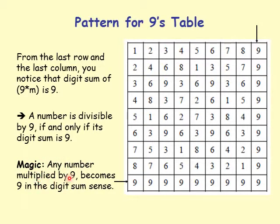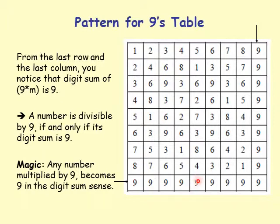Magic: any number multiplied by 9 becomes 9 in the digit sum sense. 1 times 9 is 9 — digit sum 9. 2 times 9 is 18 — digit sum 9. 3 times 9 is 27 — digit sum 9. 9 times 5 is 45 — digit sum 9. Any number multiplied by 9 becomes 9 in the digit sum sense.